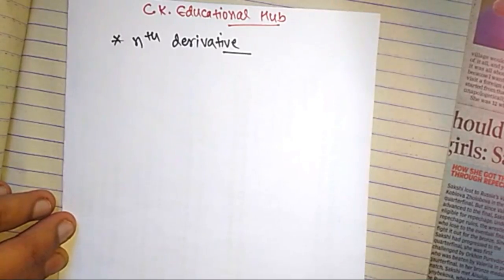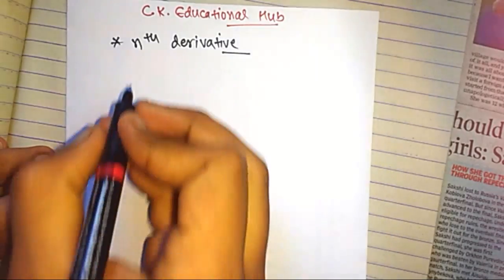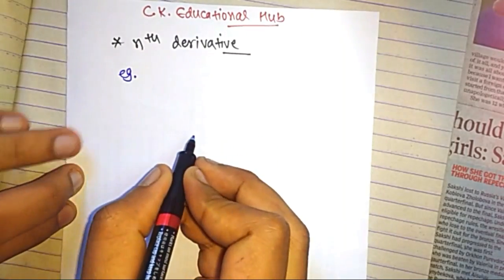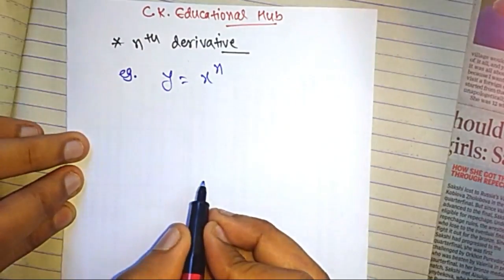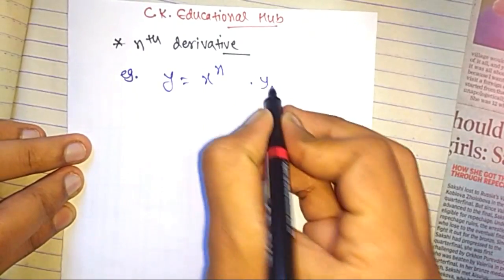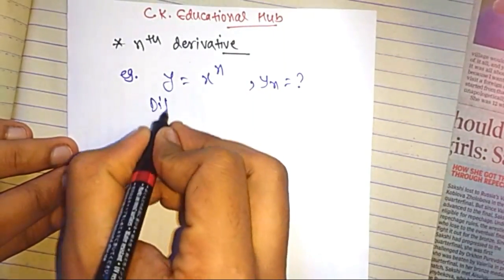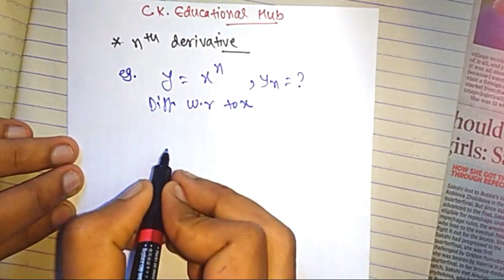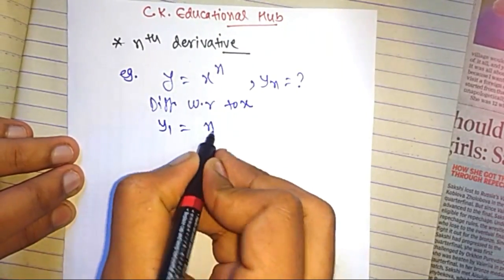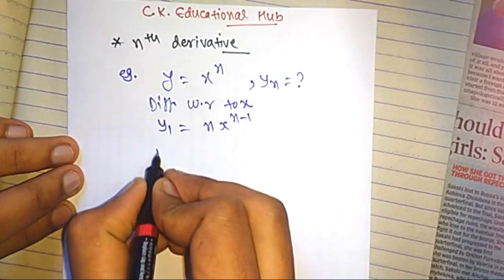Now we will discuss the process of how we can find the nth derivative of a function. Let us take the example y equals x to the power n. We have to find what yn equals. So first, differentiate this function: y1 equals n·x to the power n minus 1.